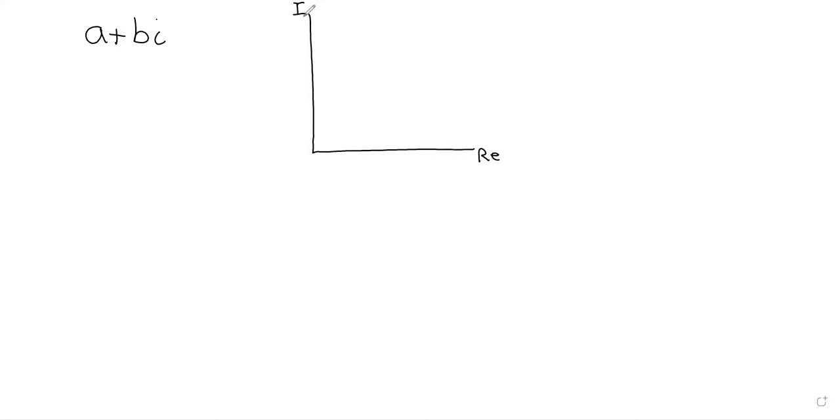We've got essentially the Cartesian plane except instead of talking about an X and a Y axis, we talk about a real and an imaginary axis, and we've got this number A plus B I.